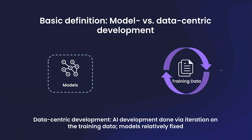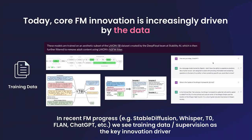Conversely, data-centric development is where the models are fairly fixed and push-button, the architecture is fairly fixed, and algorithms and infrastructure are fairly standardized even across broad problems. Iteration is done primarily via labeling, curating, sampling, slicing — broadly, developing and curating the training dataset that teaches the model. One stunning thing we're seeing is that actual innovation in new foundation models is increasingly driven by data-centric development and new techniques around what these models learn from, more so than core architectural or infrastructural improvements.